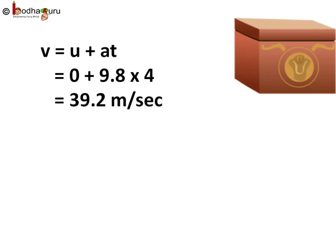So final speed v when it hits the ground will be equal to u plus at. That is v is equal to initial speed 0 plus acceleration of 9.8 meter per second square multiplied by time taken which is 4 seconds. So this comes out to be close to 39.2 meter per second. That is the speed with which it hits the ground.